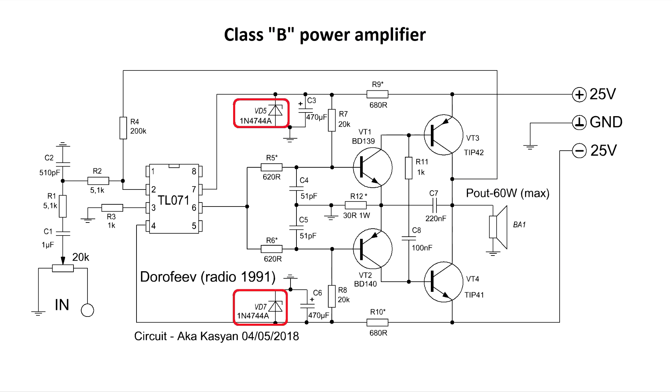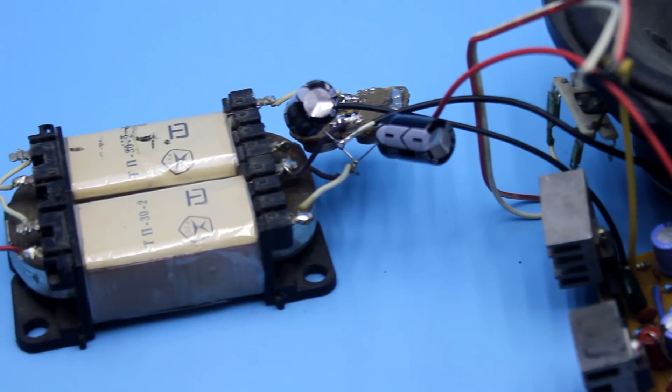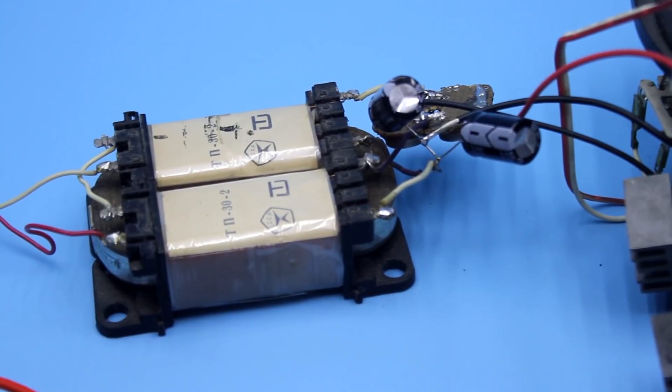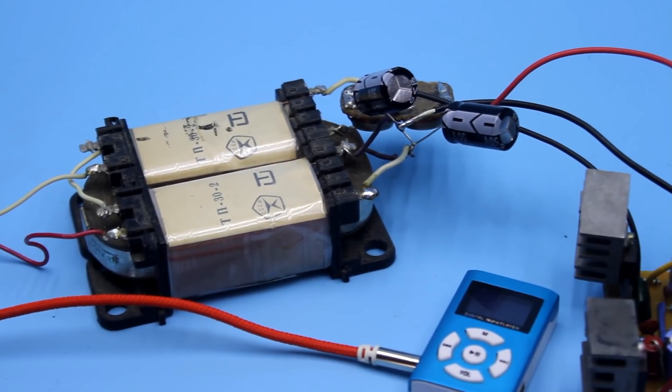Zener diodes can be half a watt with a stabilization voltage of 14 to 18 volts. A few words about the power source. In the case of a transformer power supply, it is desirable to use filter capacitors with a capacity of at least 4700 microfarads in each shoulder. The more the better.